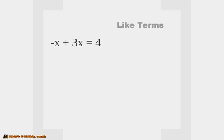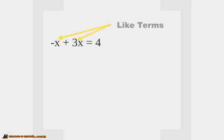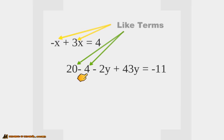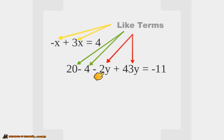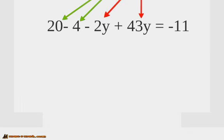Let's look at some examples. We've got negative x plus three x equals four. The negative x and the three x are like terms because they can be combined — like terms are anything that can be combined. We combine those together and you get two x, so two x equals four. Here's another one: we've got the 20 and the minus four — that becomes 16. And then the negative 2y and the 43y — bring those together and you get 41y. You can combine these, but you can't combine the negative four and the negative 2y.